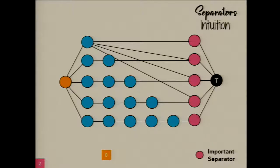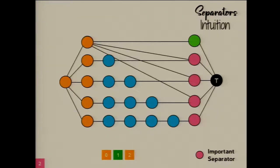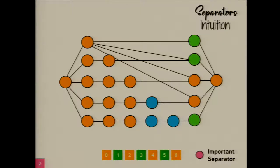Let's see an example. This would be an important S-T separator. Think of S as the source of the fire and T as the only critical node we want to save. Let's say we place a firefighter here. The fire meanwhile has touched all of these other vertices. Now I place a firefighter here. The fire is looking dangerous because it's already hit the important separator. And now no matter what I do, the critical node has already caught fire. You can check this is a poor strategy no matter which order you choose to place the firefighters on the important separator vertices.